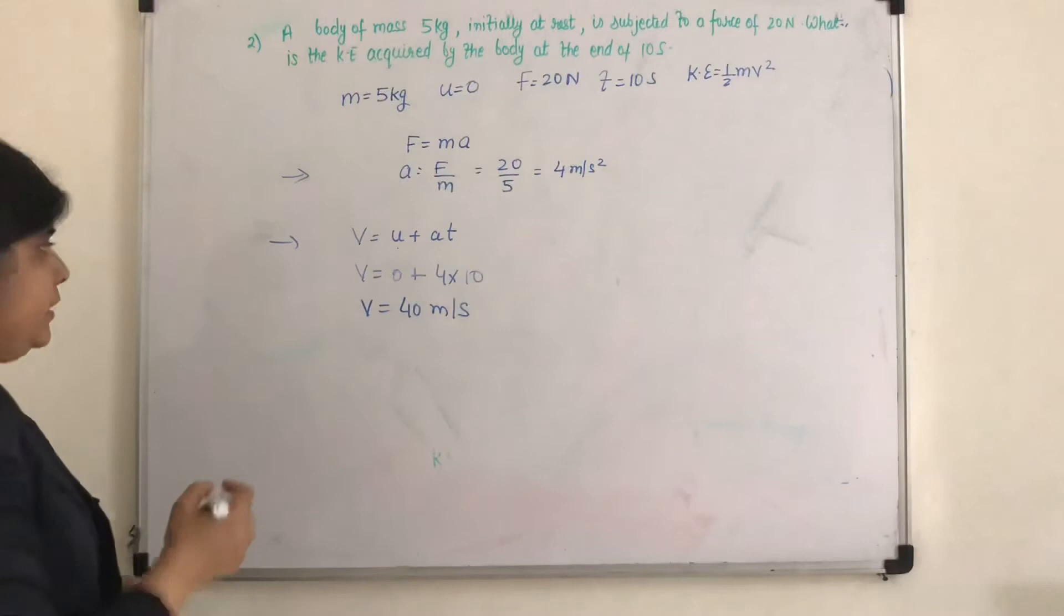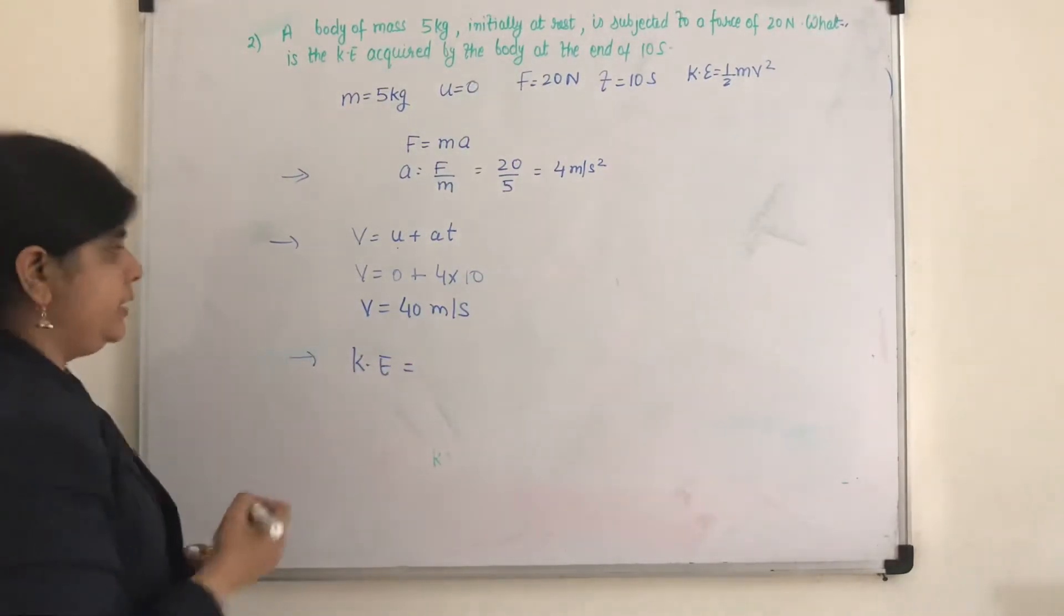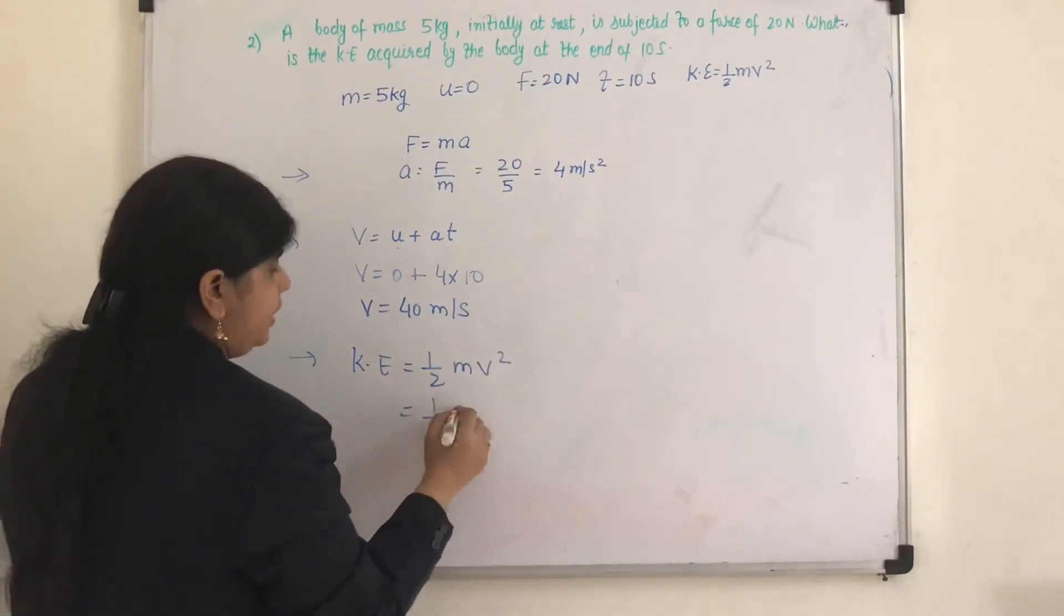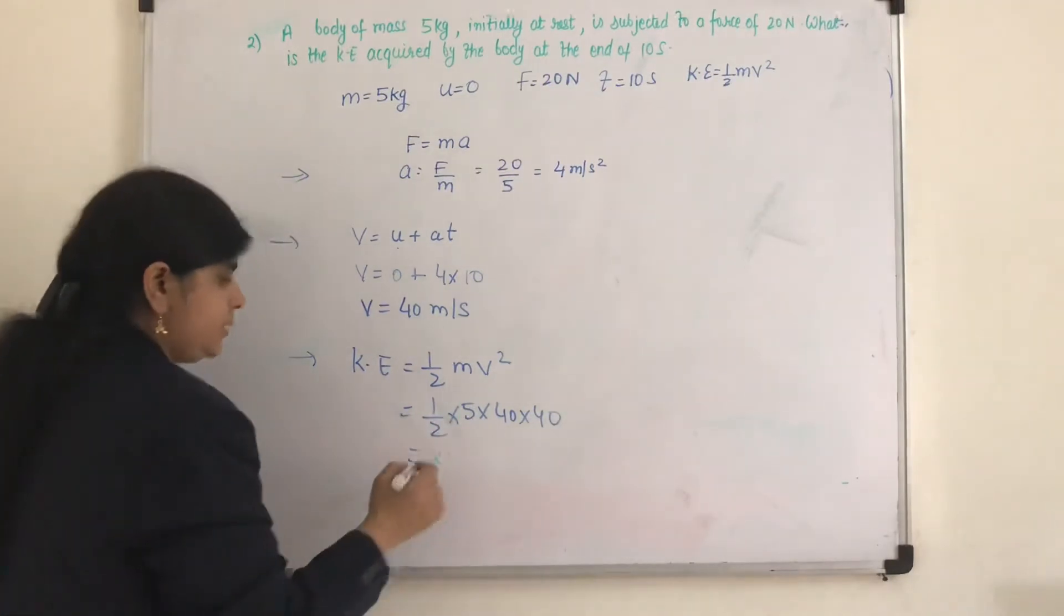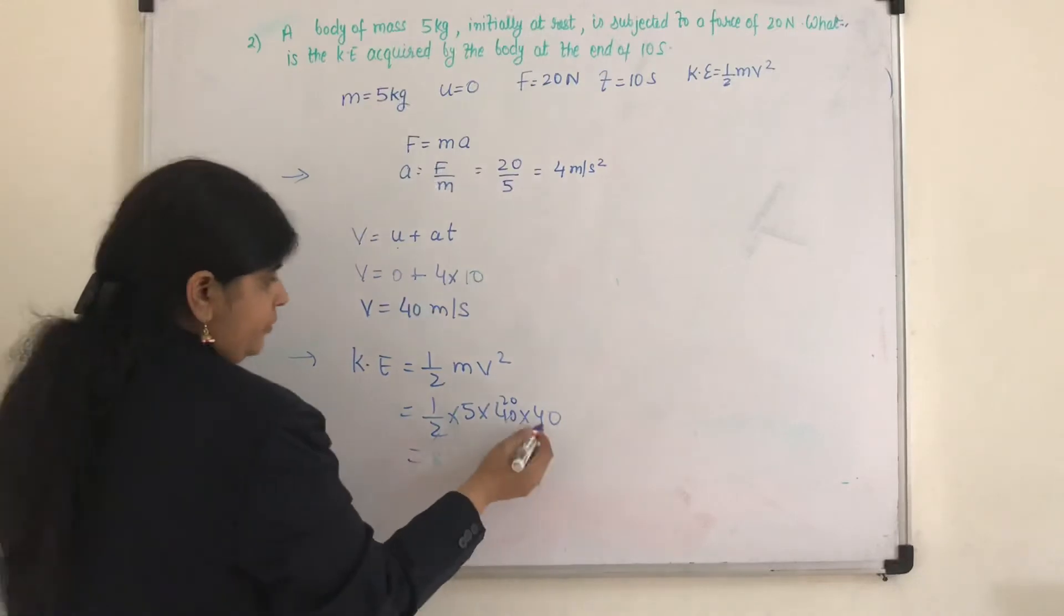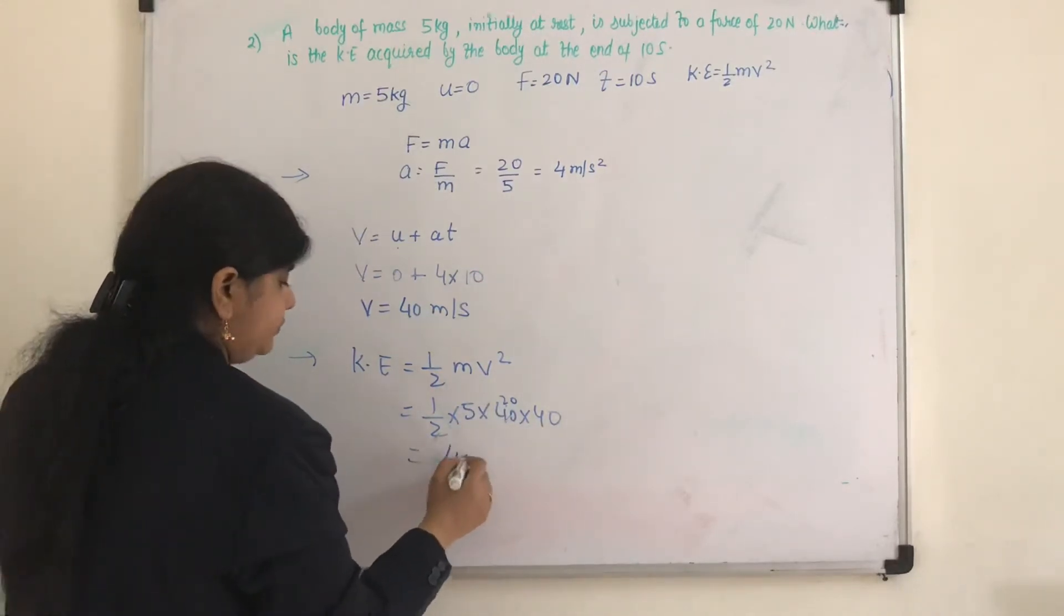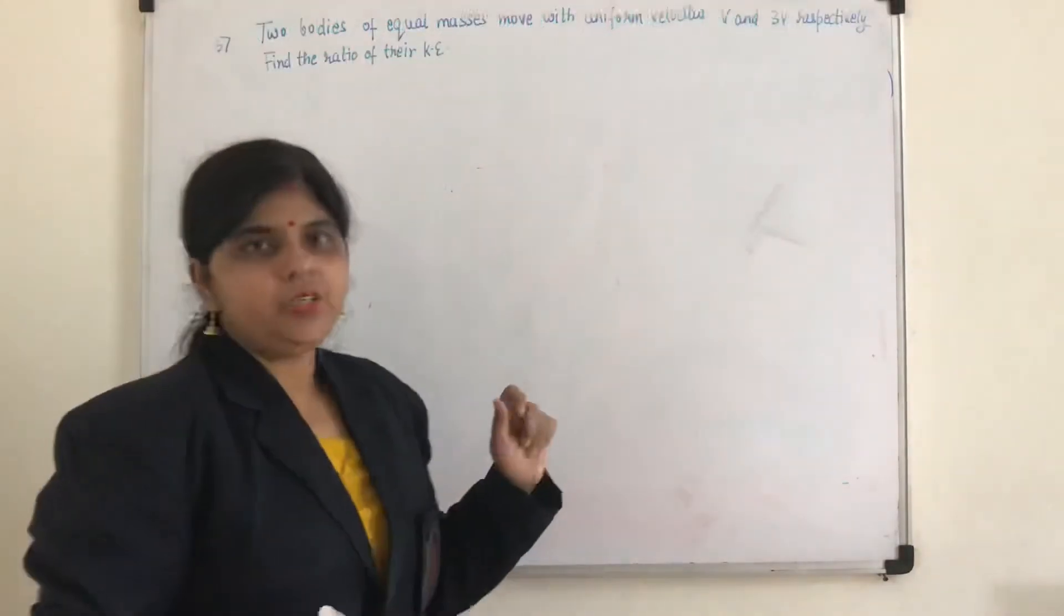So last step. Therefore the kinetic energy, now we are calculating the kinetic energy, and it is given by half mv square. Half m is 5, and v is 40 into 40. So this you can cancel. 2 20s are, so 4 2s are 8, 8 5s are 40, 4000.